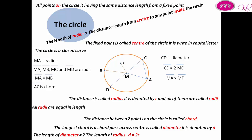The length of the radius is less than the distance from the center to any point outside the circle. MA is less than ME.